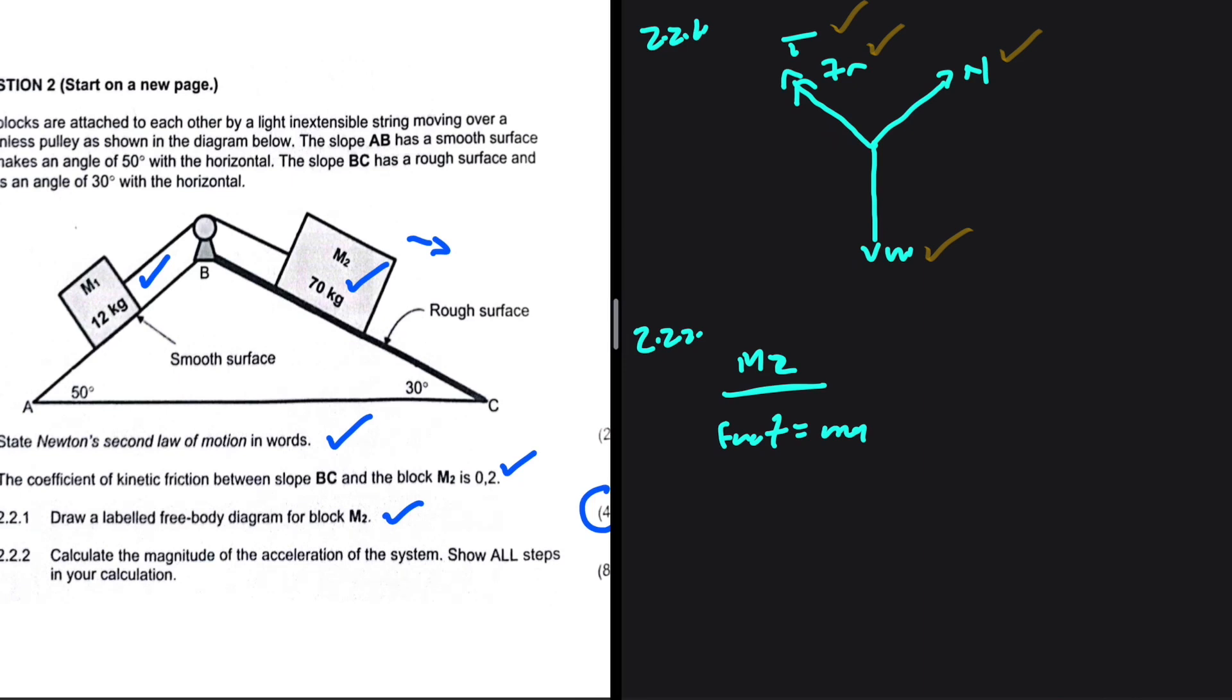We say the force pulling the object minus all the forces that are opposing. M2 is going down the slope. That is due to the parallel component of the weight. So we have Fg parallel minus the frictional force minus the tension force being equals to MA.